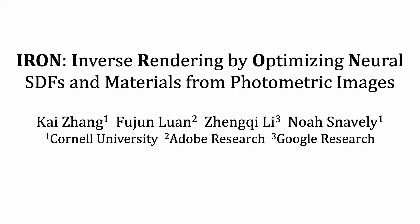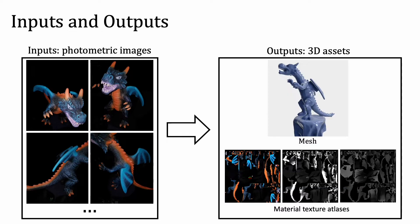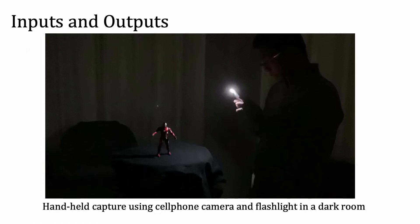We present IRON, a neural inverse rendering pipeline that takes in photometric images and outputs meshes and material textures that can be easily rendered in existing graphics pipelines. Photometric images refer to images where the lighting is from a point light source co-located with the camera. We can capture such photometric images in a dark room using a cell phone camera illuminating the scene with the on-device flash.